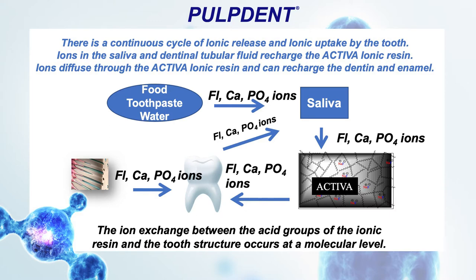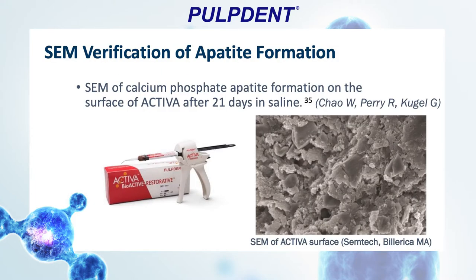Activa provides calcium, phosphate, and fluoride to a demineralized tooth. The amount of those ions diminishes in the restorative material, but it's then recharged through food, toothpaste, water, saliva, and dentinal tubular fluid. There's a constant ion exchange between acid groups at the ionic resin and the tooth structure interface, occurring at a molecular level. This slide shows apatite formation — calcium phosphate apatite — on the surface of Activa after 21 days in a saline moisture environment. Imagine: are the restorations in your mouth able to precipitate apatite on the surface and help seal restorative gaps? The answer is no, unless you're using Activa Bioactive.